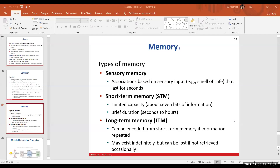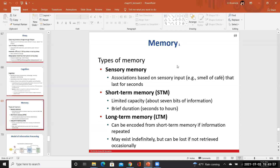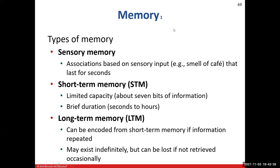Let's quickly finish up chapter 13 and talk about memory, which is perfect because a lot of this will address you folks, especially as you move through this chapter when trying to learn information for the rest of the course. There are three types of memory: sensory memory, short-term memory, and long-term memory.